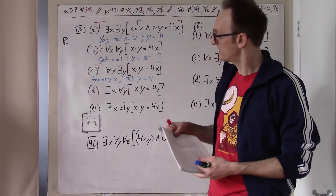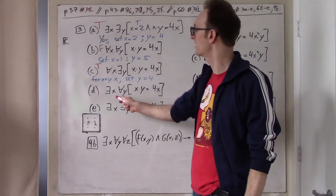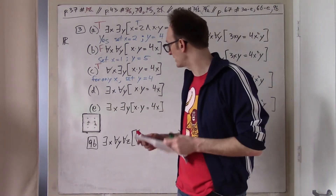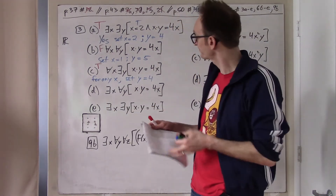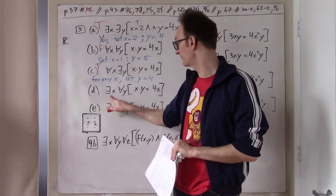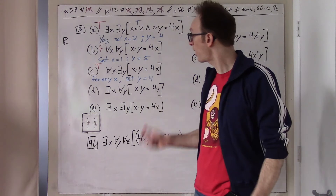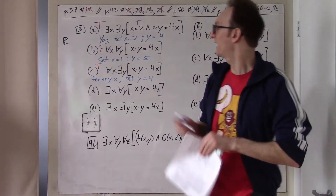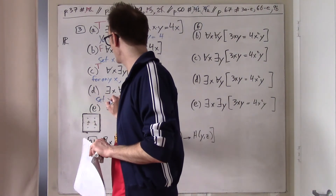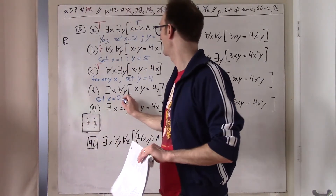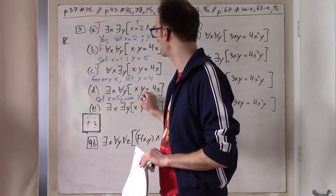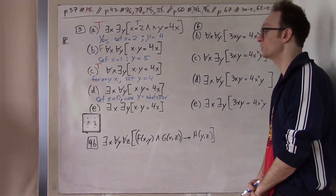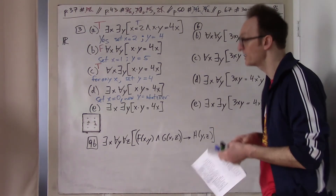Part D: There exists an X such that for all Y, XY = 4X. The answer is yes — set X = 0. If X = 0, then Y can be whatever you want, and the sentence inside the brackets is automatically true regardless of Y. So once X is 0, then for any Y, this is true.